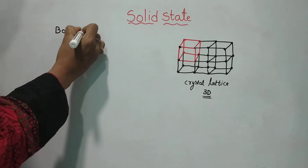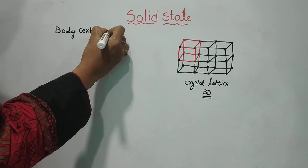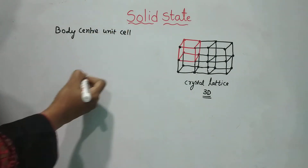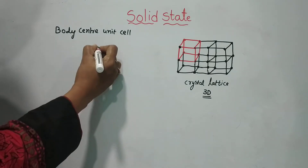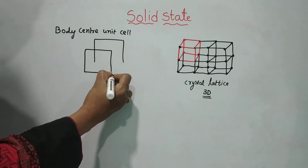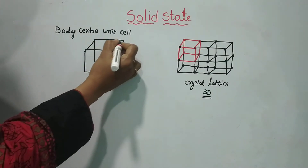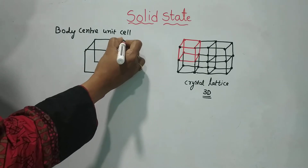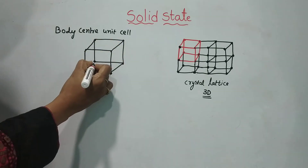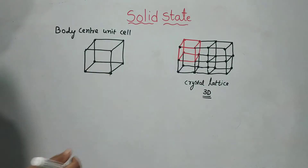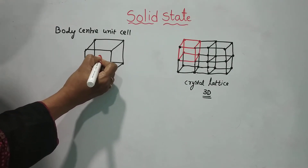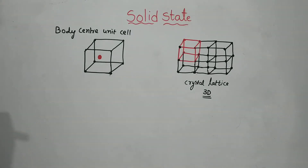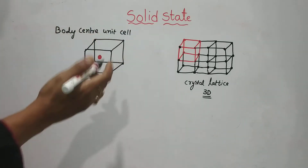Body center unit cell: in the middle of the unit cell, there is one particle present in the center of the body. This is a body center unit cell.